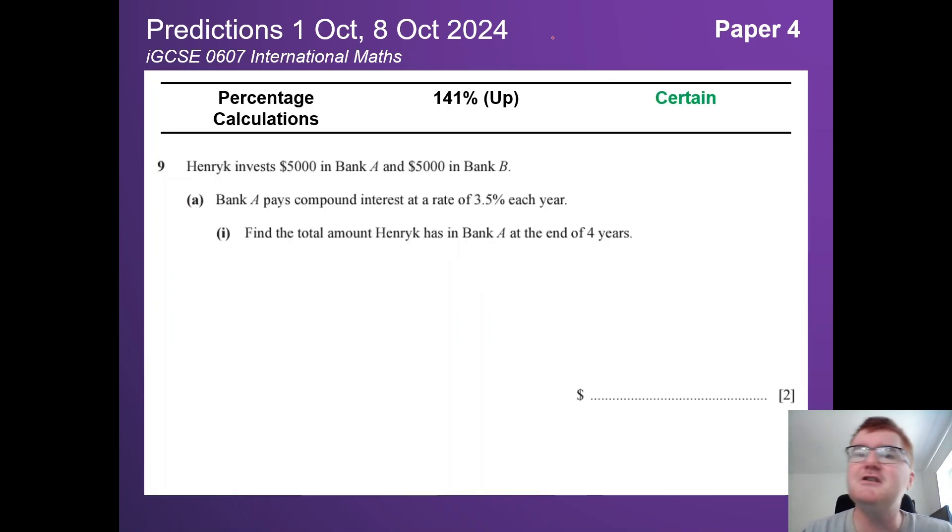Percentage calculations. This is a big question that always appears. They do try and vary it. They've noticed students are getting quite good at these kind of questions, so they're trying to really change the language here. Looking for the total amount, just the interest. We've got simple interest, compound interest, and sometimes we do some graphing with it as well. So they are making these questions harder. You'll need to revise even harder as well.